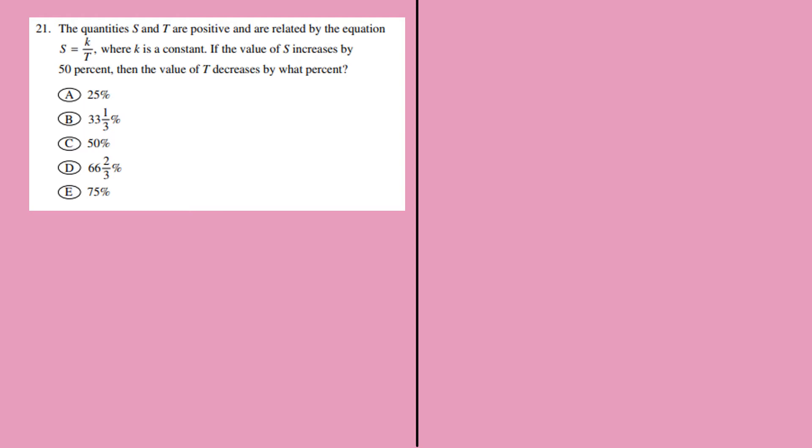Now S increases by 50 percent. So original is S and it is increased to 50 percent. With S I have to add half S. S plus half S gives me three-halves S. Three-halves S is my change in S. That is, my new S is three-halves S.